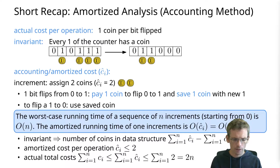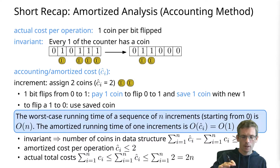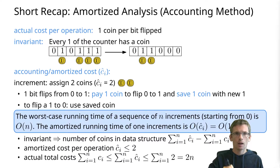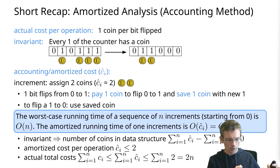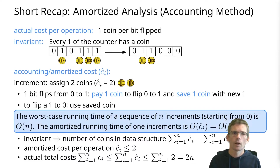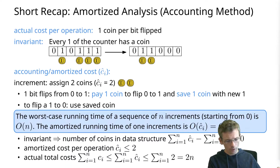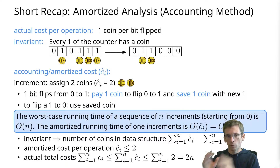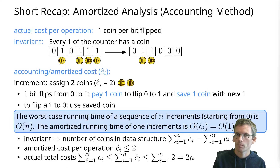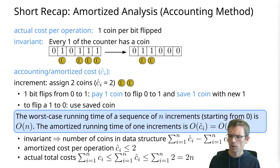The argument is: we have the invariant that we always have a non-negative number of coins. The sum of amortized costs is always larger than or equal to the sum of actual costs. The amortized cost per operation is exactly two in this case. We can then bound the sum of actual costs by the sum of amortized costs, which is the sum of twos from one to n. That's the accounting method — if that was too fast, make sure to watch the corresponding video.